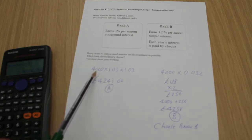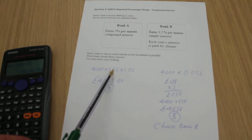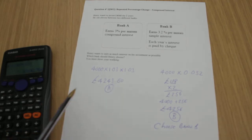£4,000 in Bank A invested at 3%, so I've multiplied by 1.03, one lot of it plus the 3% extra. I've multiplied it by 1.03 again because that's my second year, and I get an answer of £4,243.60.